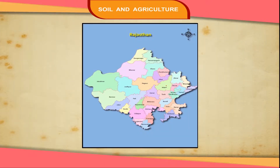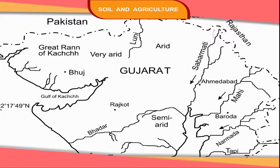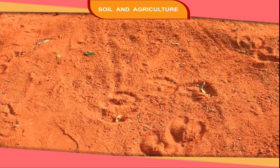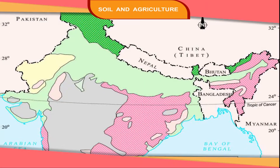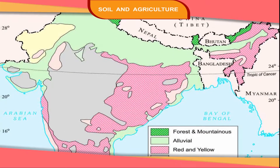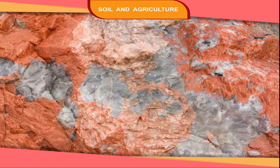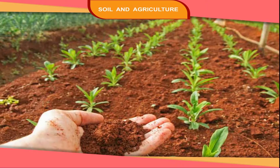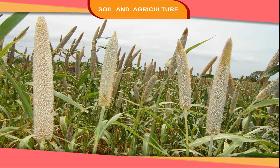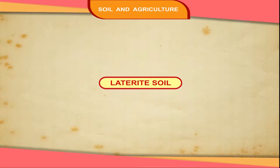Desert soil is found in Rajasthan and some parts of Gujarat. Red soil is found in most parts of the southern plateau. It is formed by the breaking of rocks like granite and is red in colour. Red soil is good for growing millets like jowar, bajra and groundnuts.